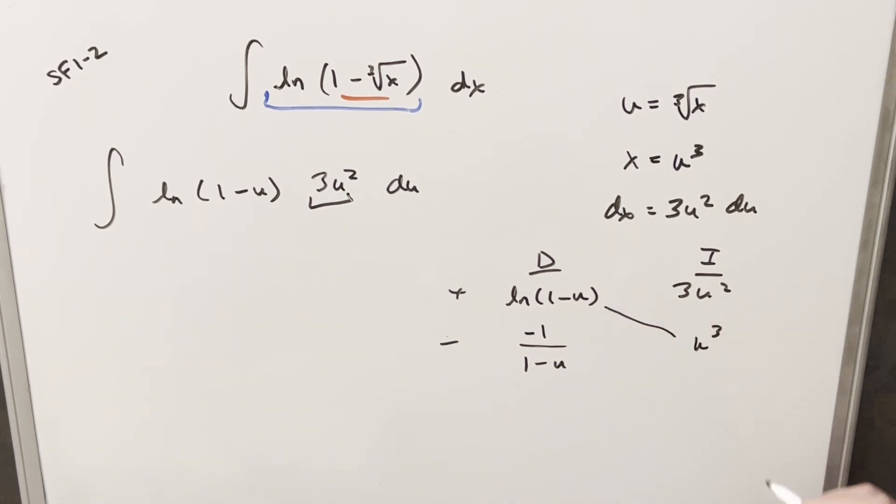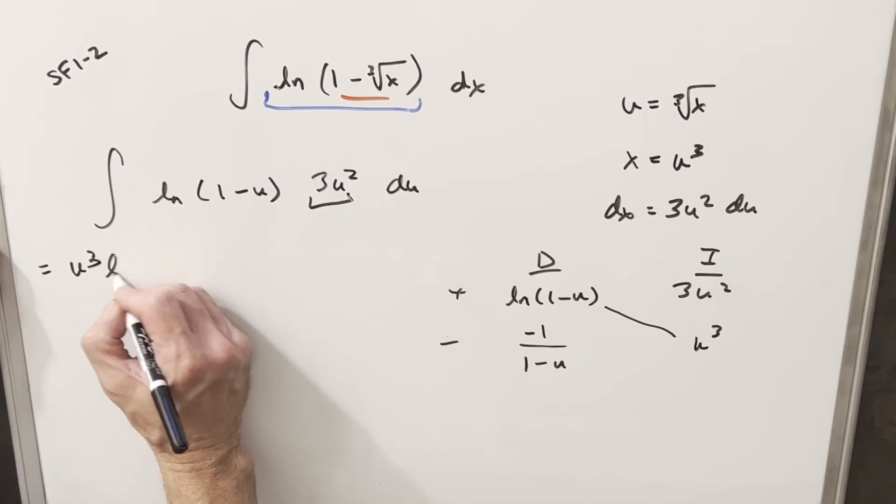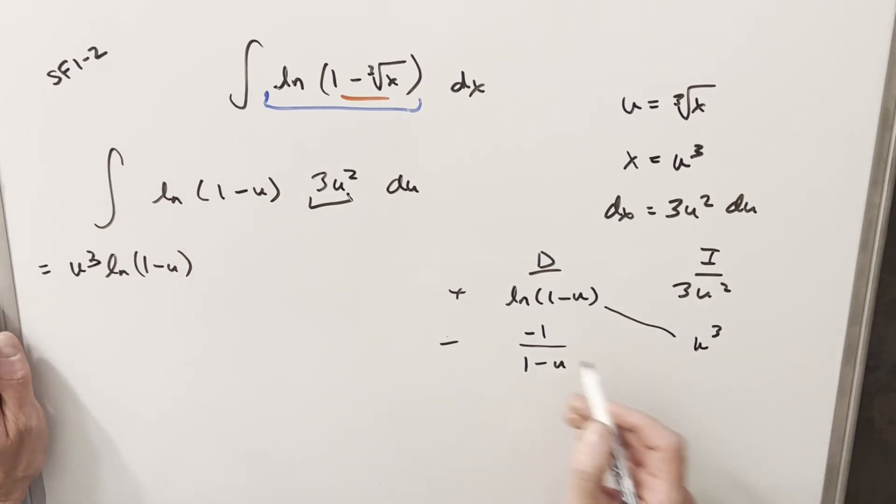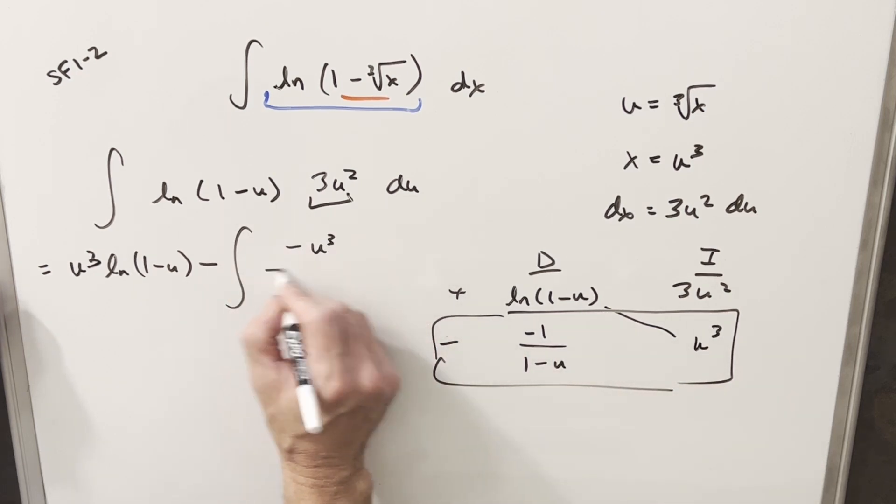And so then part of our solution is going to be here on the diagonal. So let's just write that down. We're going to have u cubed, natural log, 1 minus u. And now this row here is going to be an integral. What I'm going to do, so we're going to have our minus sign out front. I'm going to keep this minus and write it as minus u cubed. And then here, we're going to have 1 minus u.